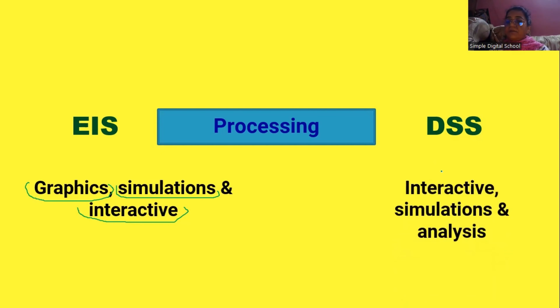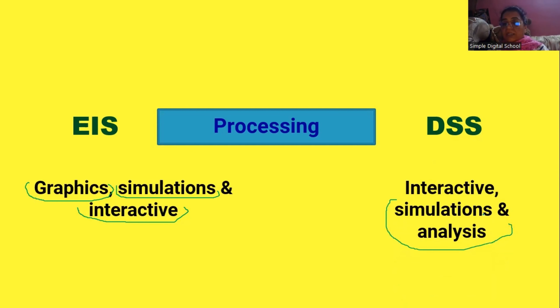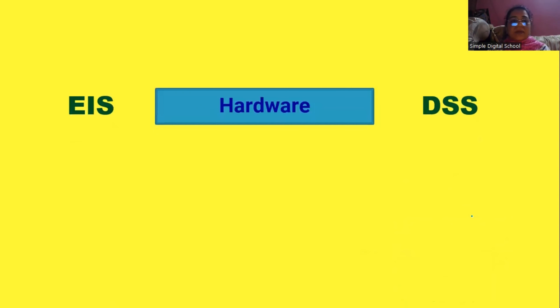In the DSS system, processing remains interactive. GUI is desirable, simulations are done, and complete analysis is performed — decision trees are generally used here for doing the analysis. Regarding hardware: EIS is used with distributed systems generally.